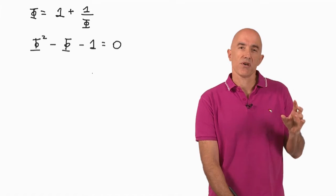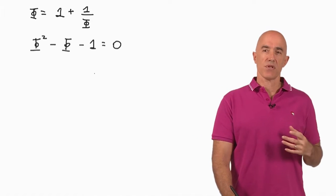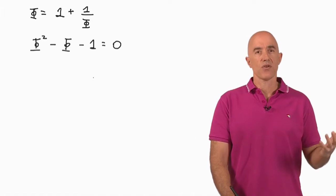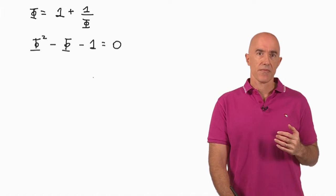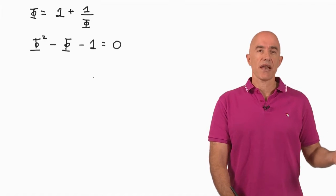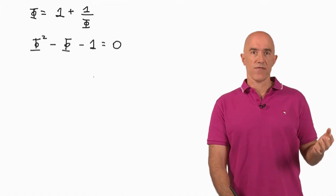And this is equal to zero. So the golden ratio satisfies a rather simple equation. It's called the quadratic equation: Phi squared minus Phi minus one equals zero.